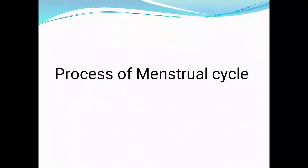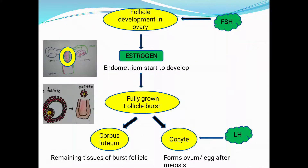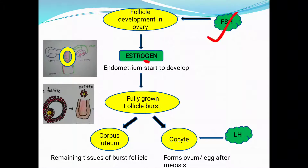Now let's see the detailed process of the menstrual cycle through a flowchart. The follicle's development inside the ovary is driven by the hormone FSH — follicle stimulating hormone, whose name itself describes its function. Under the effect of FSH, the follicle starts to develop. Once developing, the follicle itself secretes the next hormone, estrogen.